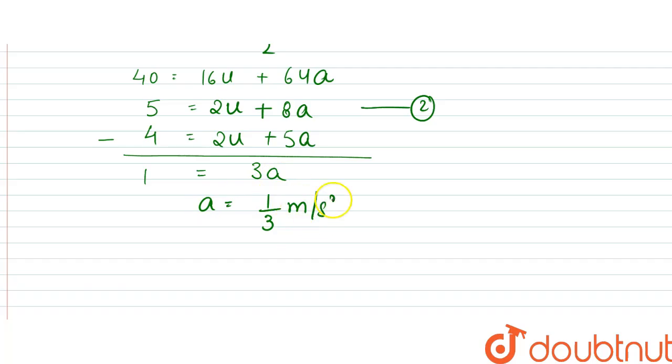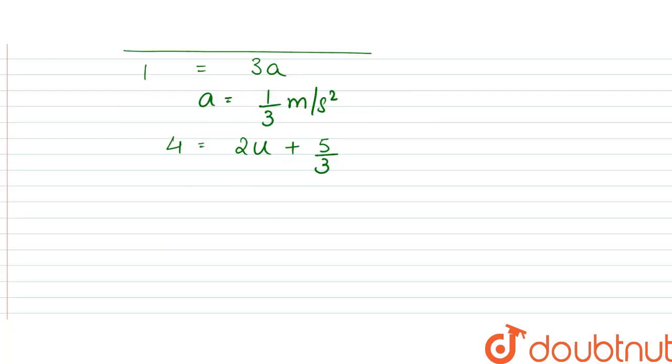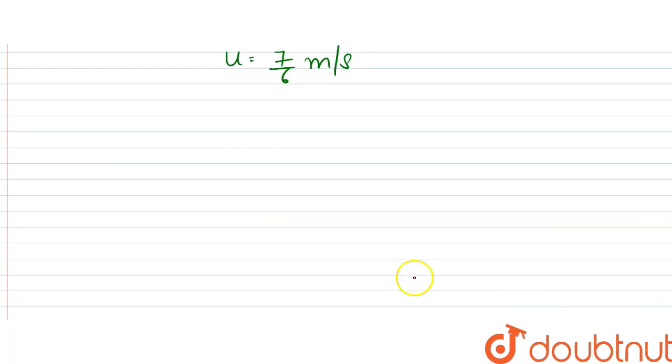And when we input this, 4 equals 2u plus 5 by 3. So 2u equals 4 minus 5 by 3, so 12 minus 5, 7 by 3. U equals 7 by 6 meter per second. That is the initial speed.